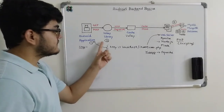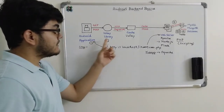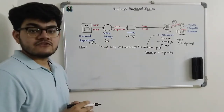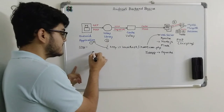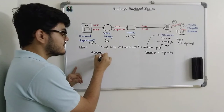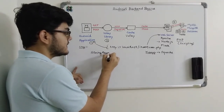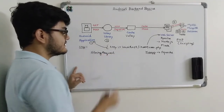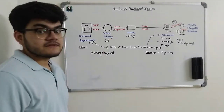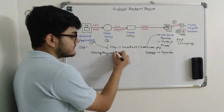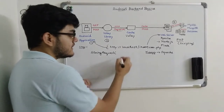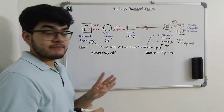Now let's look at the very important step of how the Android application gives the request to the Volley library, because we are going to implement it in Java. The first step is to create an object of the StringRequest class. StringRequest is a built-in class of the Volley library. We create an object of this class and pass some parameters inside the constructor. The constructor will have four types of parameters.